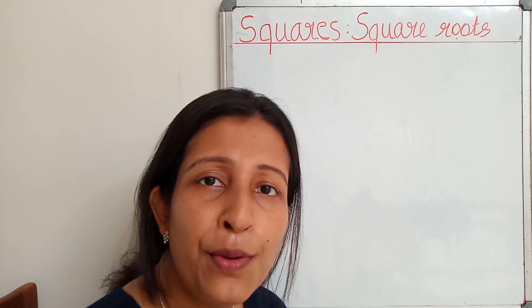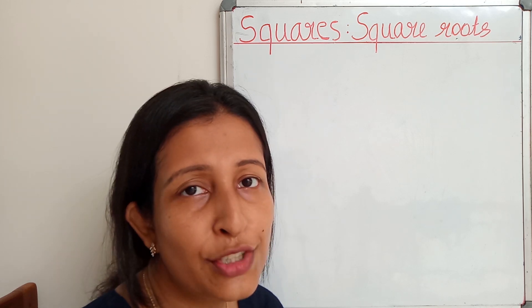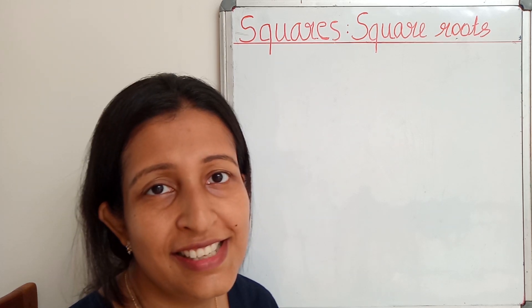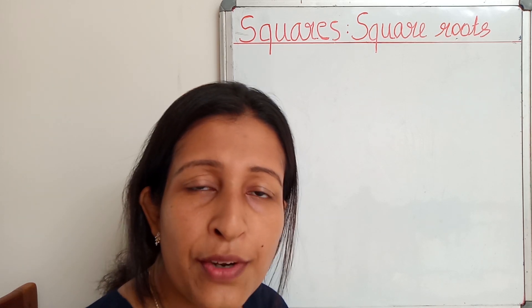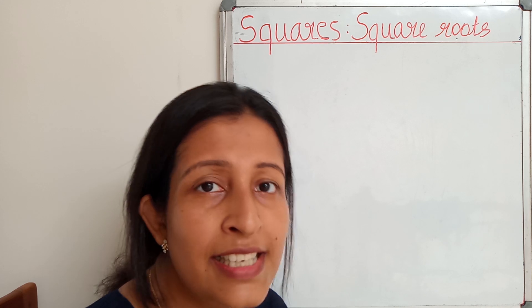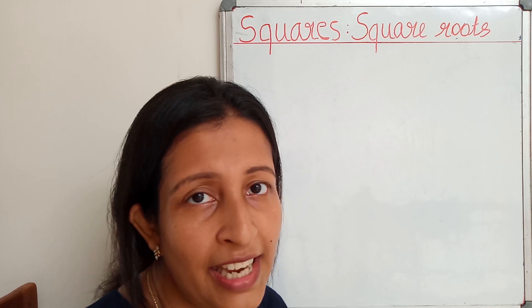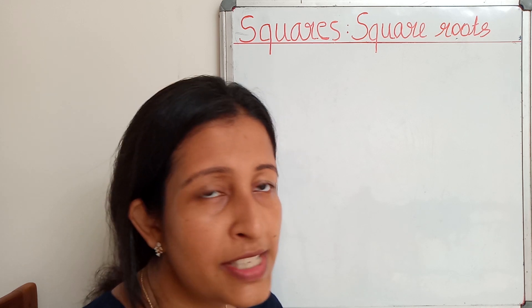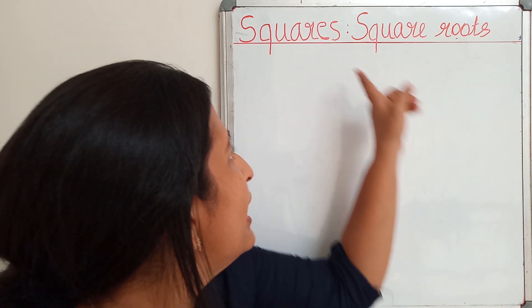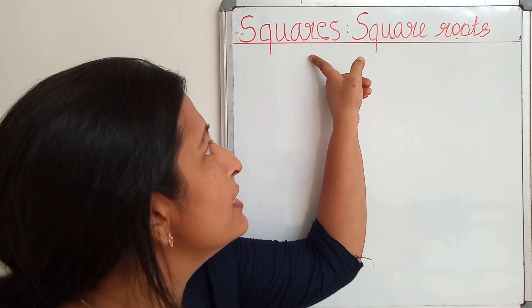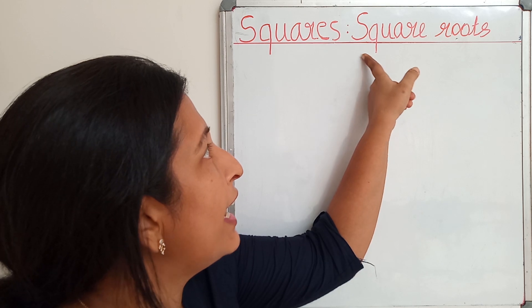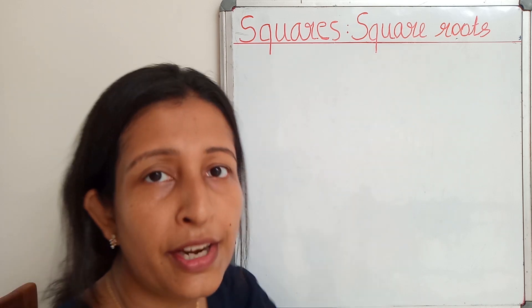Hi, hello! Welcome back to Max Ninjas. Today we are going to start Standard 8, Chapter 6. The name of the chapter is Squares and Square Roots.